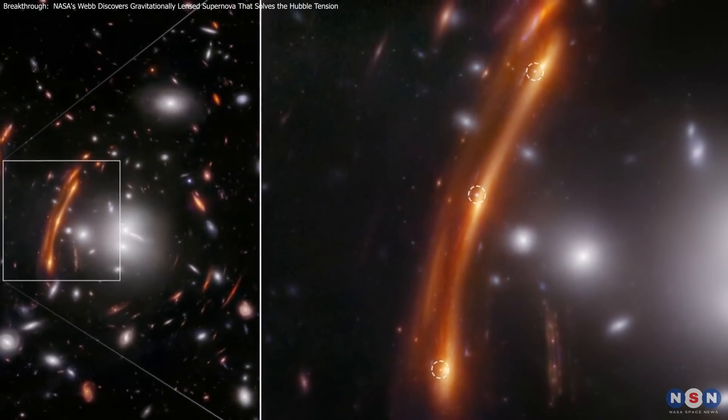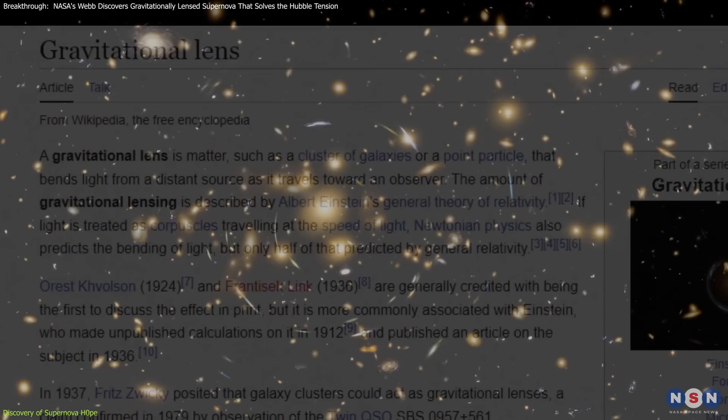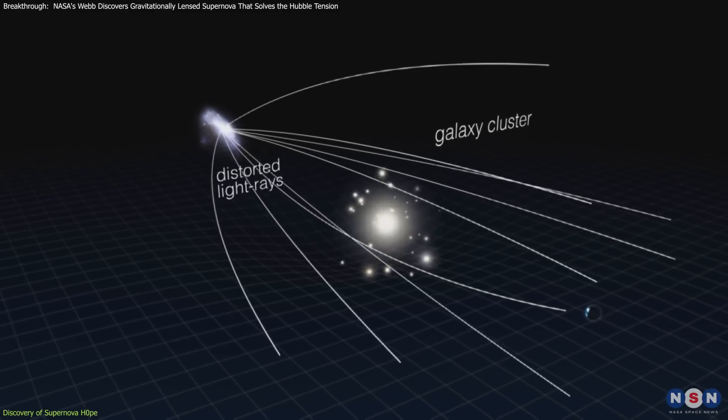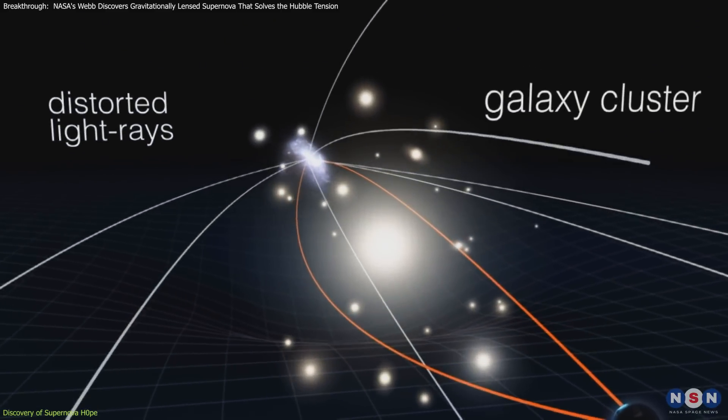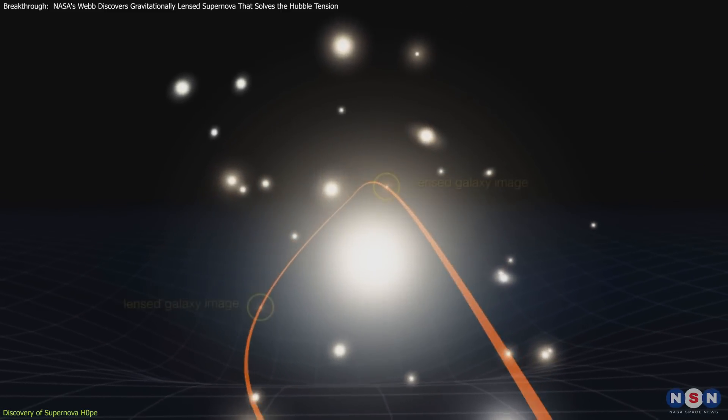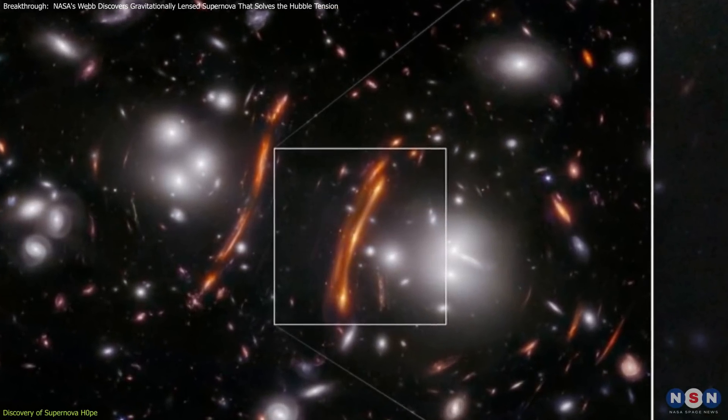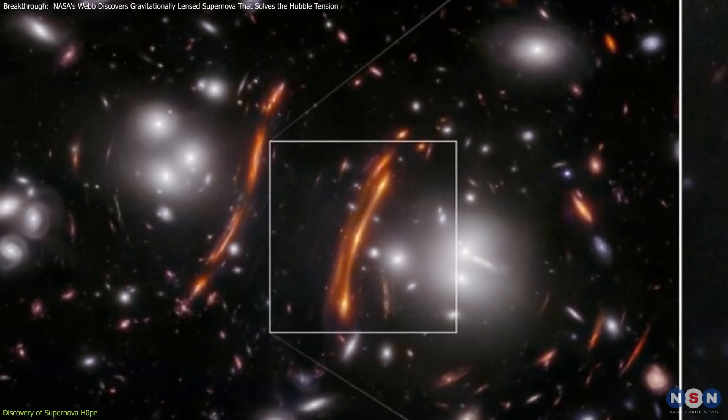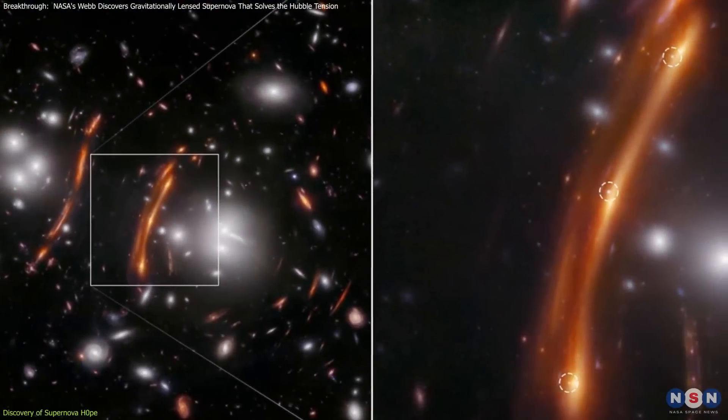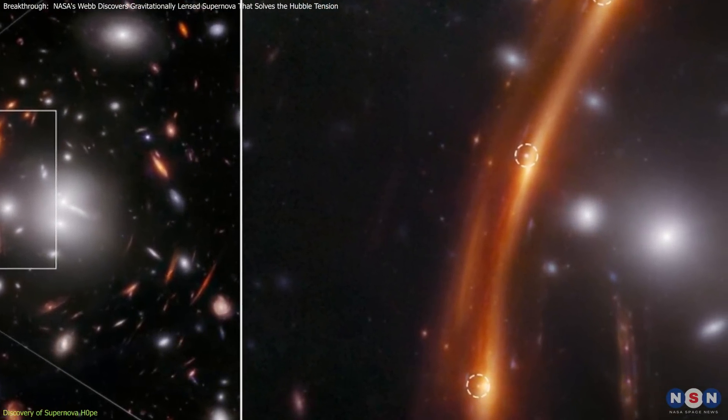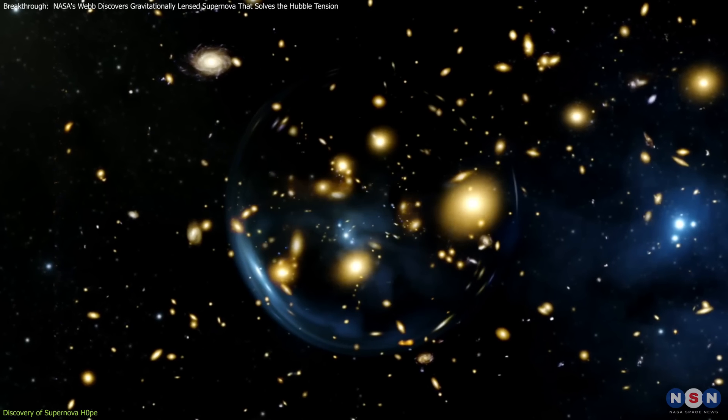Supernova Hope is a special kind of supernova, one that was observed through a phenomenon known as gravitational lensing. Gravitational lensing occurs when a massive object, such as a galaxy cluster, bends the light from a more distant object, creating multiple images of that distant object. In this case, the galaxy cluster PLCK, located 3.6 billion light-years away, acted as a lens, splitting the light of a supernova in a galaxy far behind it into three distinct images.